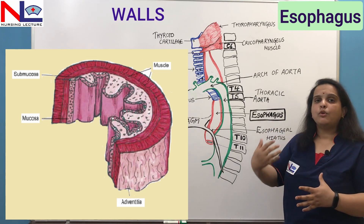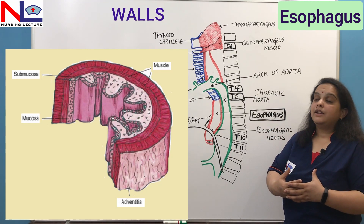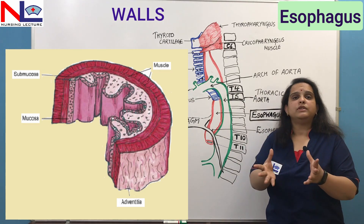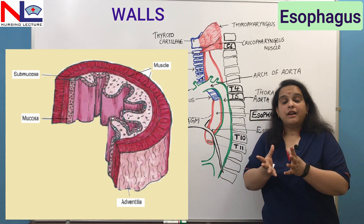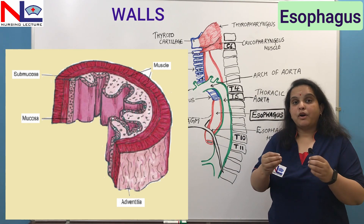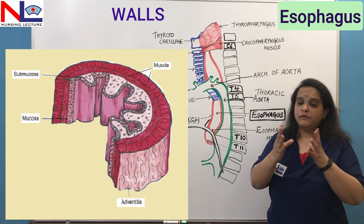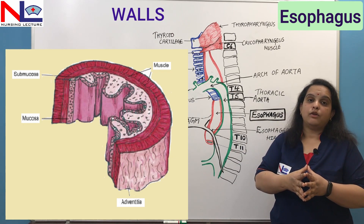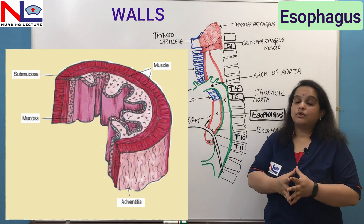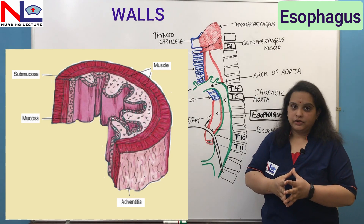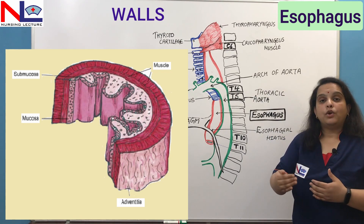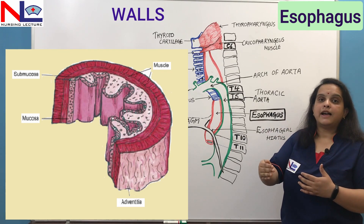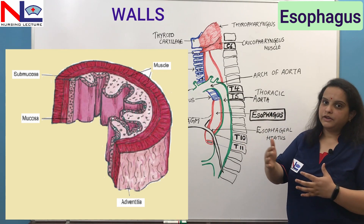The outermost layer is called adventitia rather than serosa, because the outer lining of the esophagus is made up of connective tissue that is not covered by any mesothelial or epithelial lining. So the four layers from inner to outer are: mucosa, submucosa, muscularis, and adventitia.